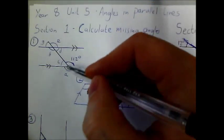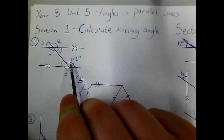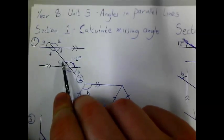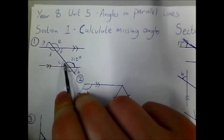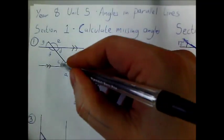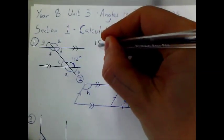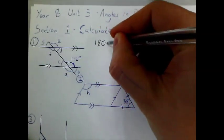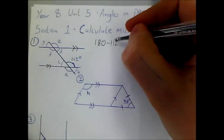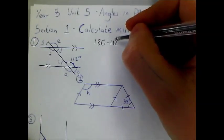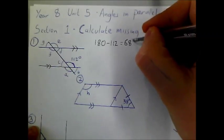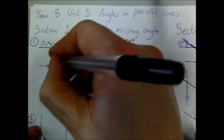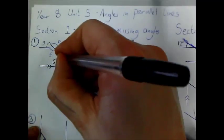Let's work out the slightly easier ones first. I notice it's 112 degrees here and this angle C lie on a straight line. So to work out angle C, I'm just going to do 180 take away 112, and that gives you 68 degrees. So this angle here is 68 degrees.